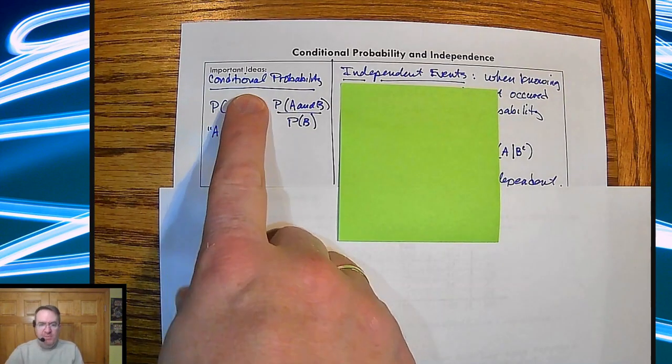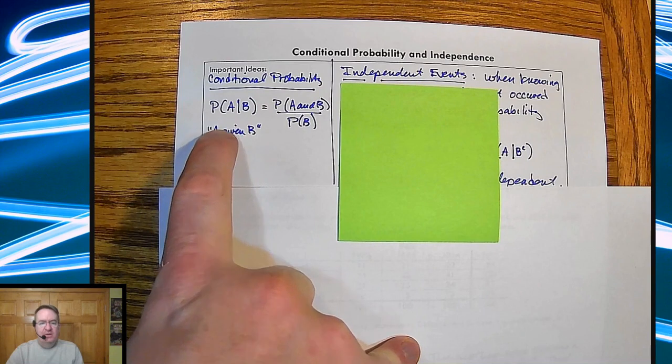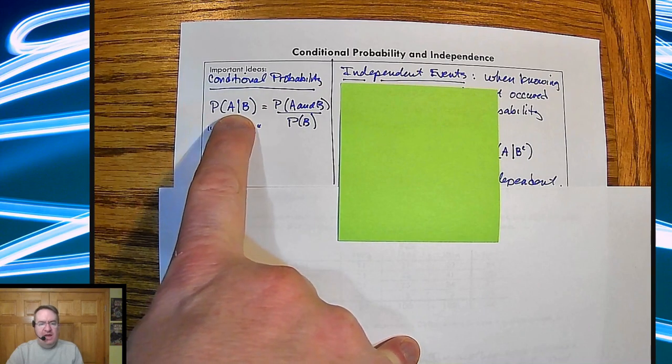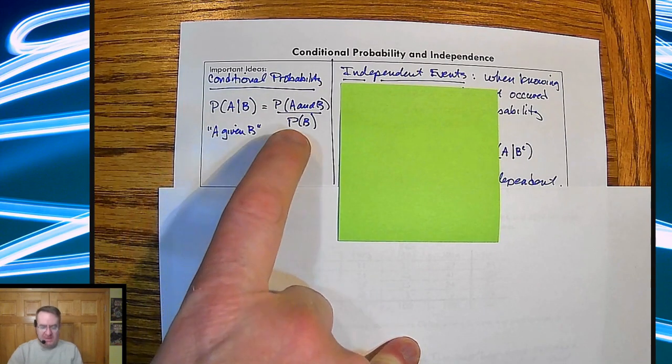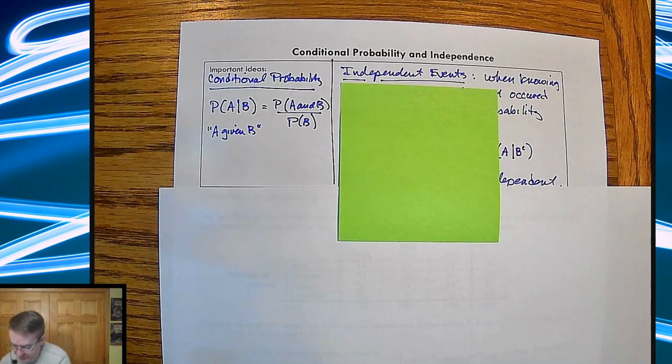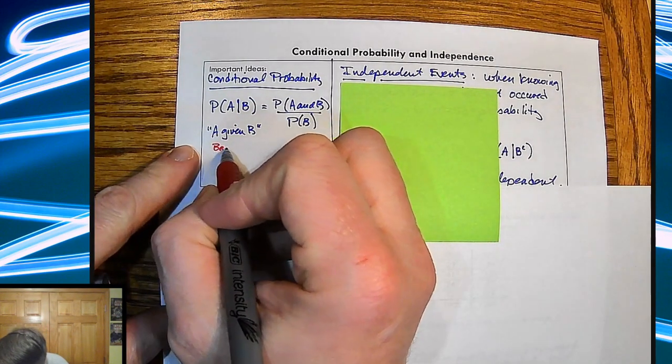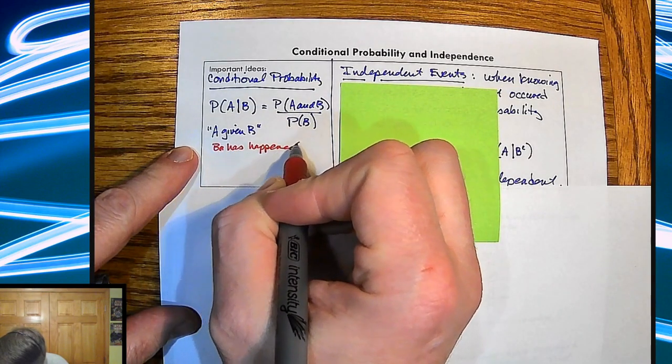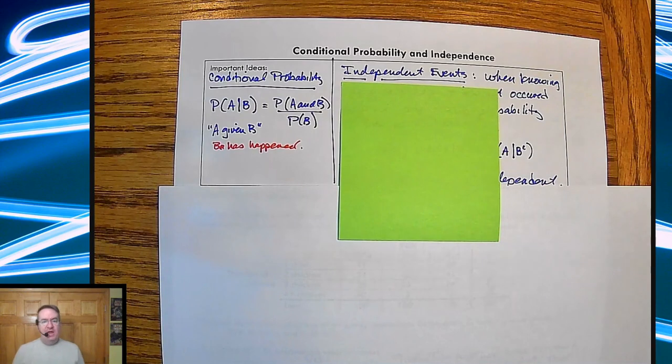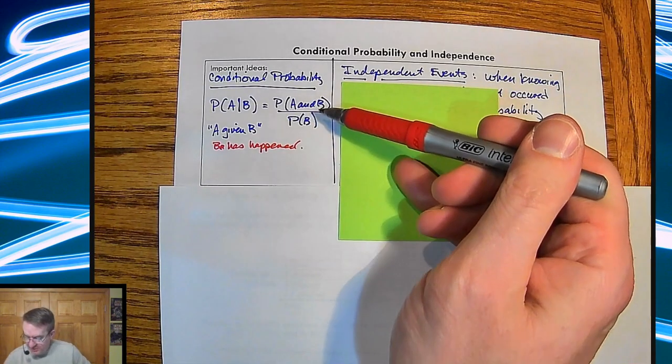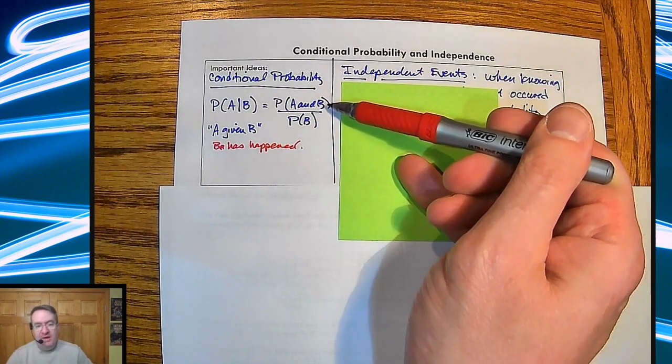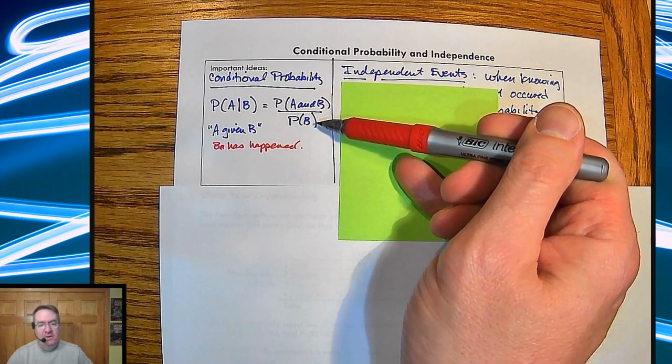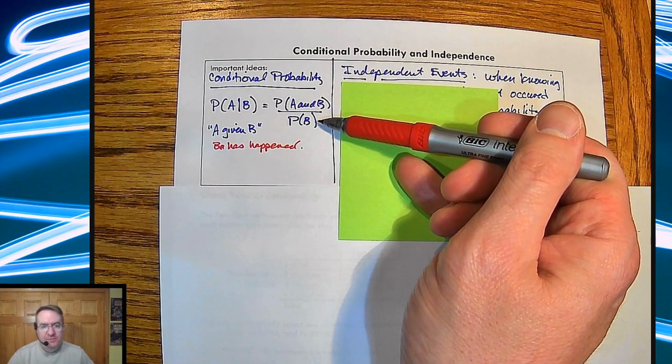So conditional probability is defined as P of A given B. That means that B happens, B has happened. So what you're going to end up doing is that it's actually defined as the probability that A and B happen given the probability B has happened.